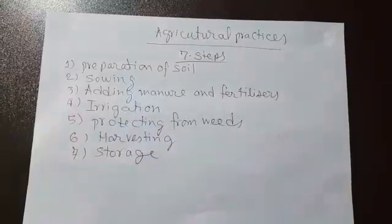Now we come to agricultural practices. In scientific agricultural practices, we follow at least seven steps. The seven steps are: first, preparation of soil; second, sowing; third, adding manures and fertilizers; fourth, irrigation; fifth, protecting crops from weeds; sixth, harvesting; and seventh, storage.